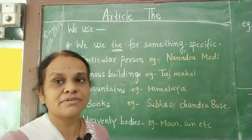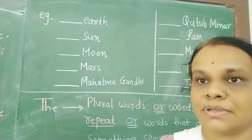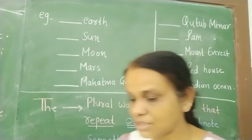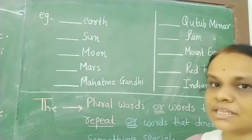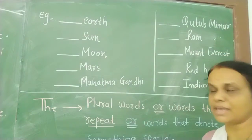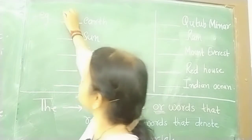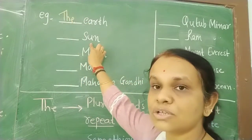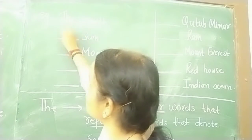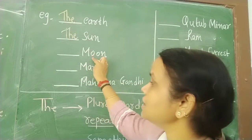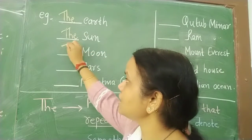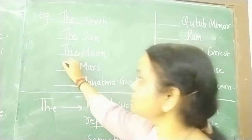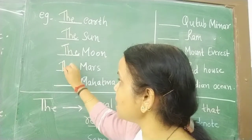Okay, now some examples I have taken here. See this example — what we have to write? Earth. How many earths are here? Unique. Yeh unique hai, ek hi hai. So we are using 'the' — the earth. Then sun also unique, specific. So the sun. Same way the moon. Then the Mars — so the Mars.